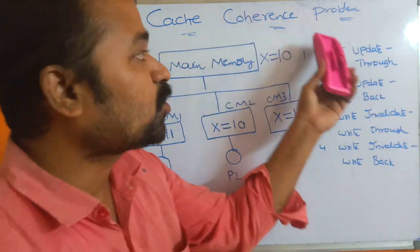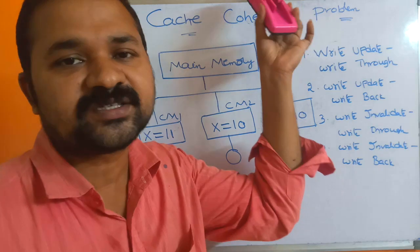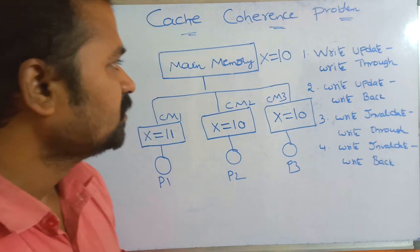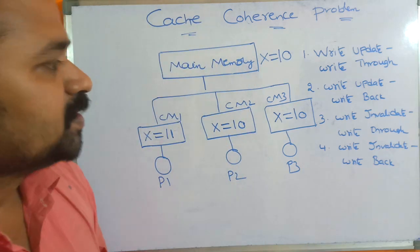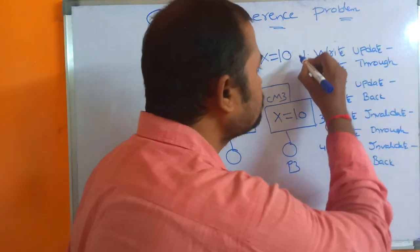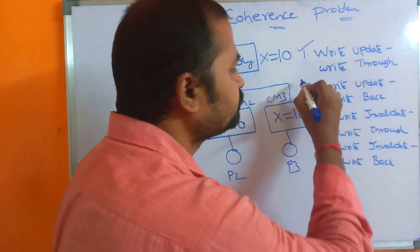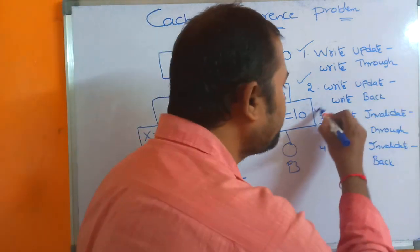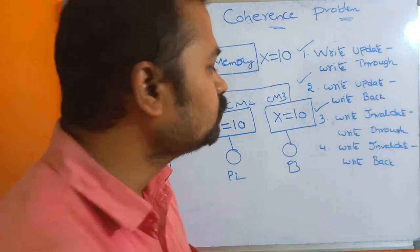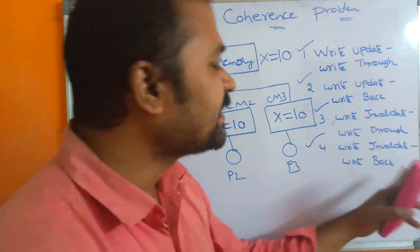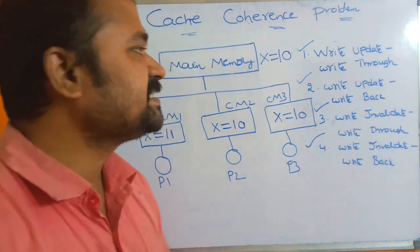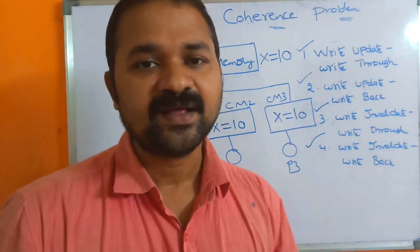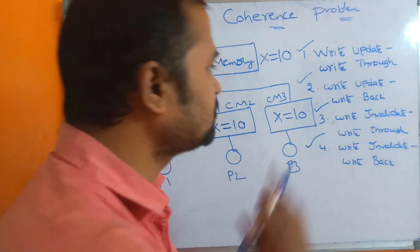This problem is called the cache coherence problem, because this problem occurs in cache memory. We can solve this problem using 4 approaches: the first is write update + write through; the second is write update + write back; the third is write invalidate + write through; and the fourth is write invalidate + write back. Let us first understand what each of these terms means, and then we will discuss the 4 approaches.